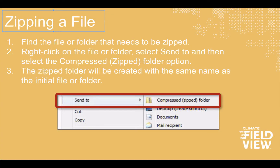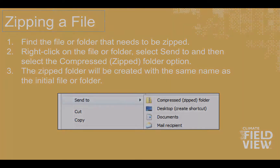How to zip a file on a PC: Locate the file that you would like to compress or zip on your laptop or USB drive. Right-click on the file or folder you would like to compress and hover the cursor over the 'Send To' option, then select 'Compress Folder.' The new compressed/zipped folder will appear on your desktop and you're ready to use that file.